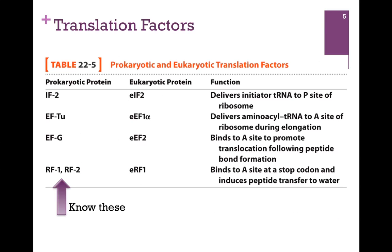Here is a table from your book illustrating a number of translation factors. We've already considered IF2 in the prokaryotic system, and we just looked at EFTU. In just a moment, we'll look at EFG, which is going to promote translocation. And then in the next lesson, we'll look at translation termination and the role of release factors 1 and 2. You want to know the roles that these prokaryotic proteins play in initiation, elongation, and termination. There are corresponding proteins in eukaryotic systems, but you will be held responsible only for the prokaryotic versions and for their relative roles.